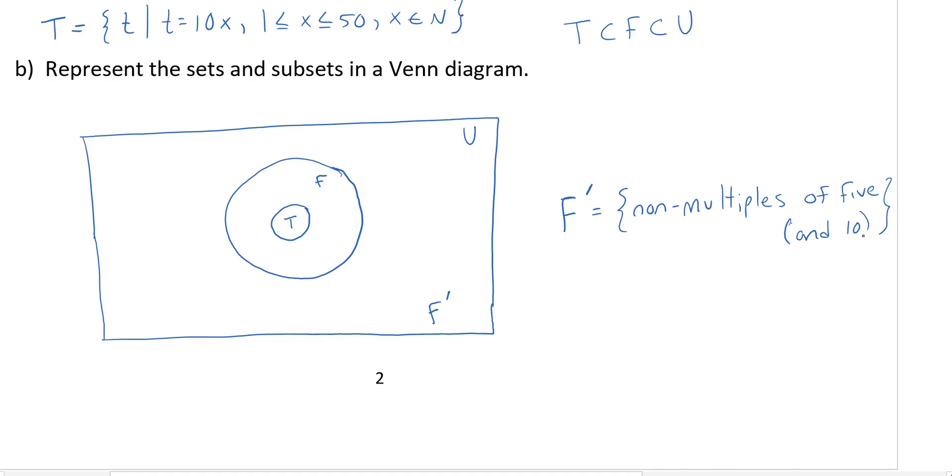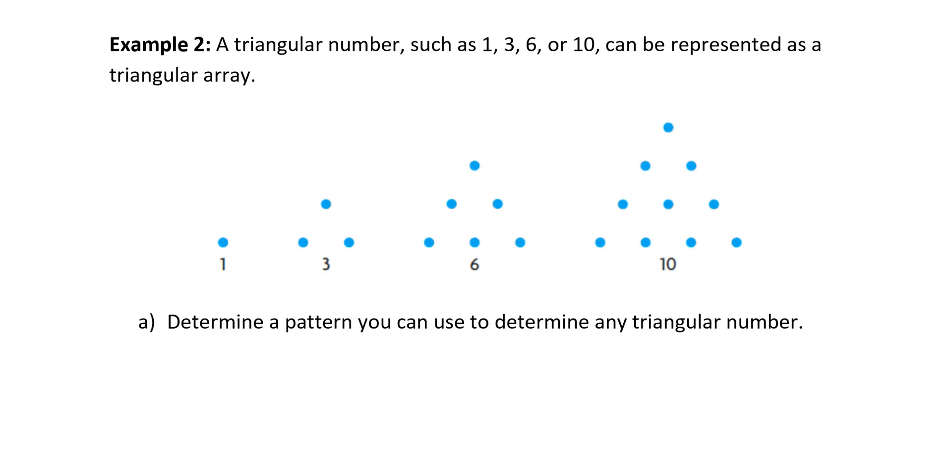Let's take a look at the next example. Here, in example 2, it says a triangular number, such as 1, 3, 6, or 10, can be represented as a triangular array. Now, if you look at the pattern here, you can see, it says determine a pattern that you can use to determine any triangular number. So, on the first one, I can see that there's just 1, for 3, that's made up of 1 and 2, for 6, that's 1, 2, and 3, and so on. You can see this pattern emerging.